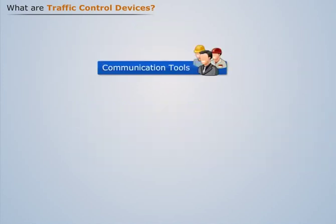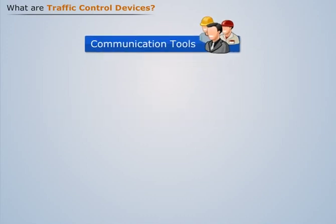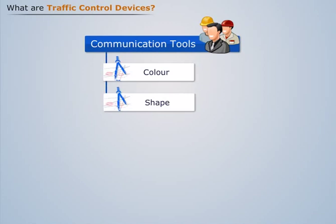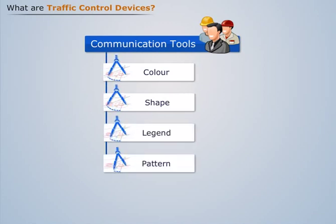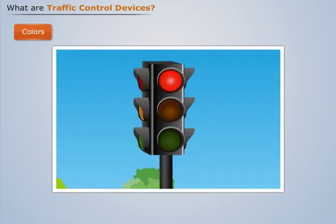Traffic engineers have generated different communication tools to convey messages according to certain human limitations, particularly eyesight. Therefore, messages are conveyed through the following elements: color, shape, legend, and patterns. The most easily noticed characteristic of a device is color. To code certain devices and messages, the most commonly used colors are red, green, yellow, black, blue, and brown.